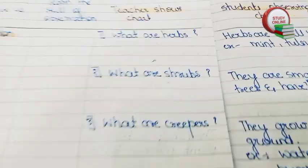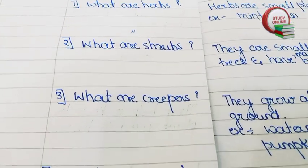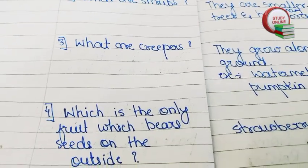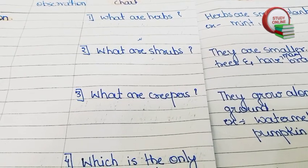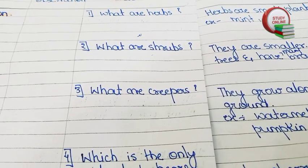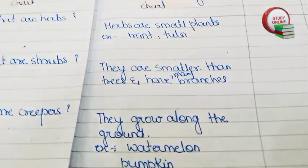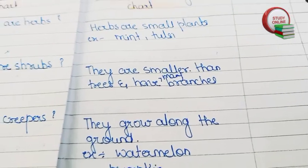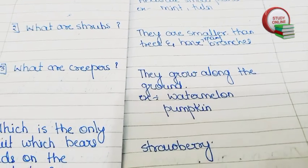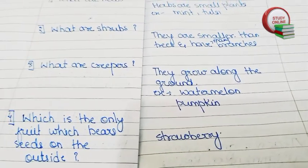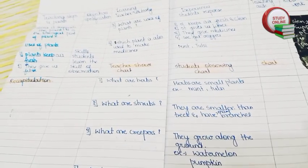Here you can see the recapitulation part: what are herbs, what are shrubs, what are creepers, and which is the only fruit that bears seeds on the outside. Here you can see the expected answers that we basically expect from students — all the list of questions and answers are clearly visible. We have to write the answers also. This way we have to make our recapitulation part.